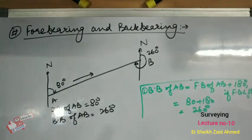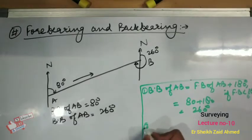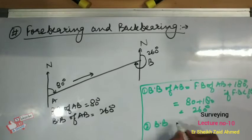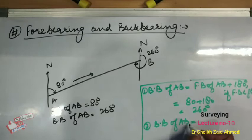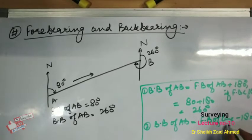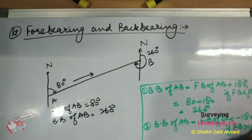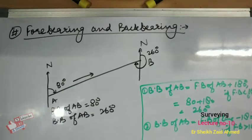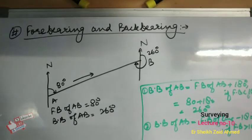In this way we can calculate the backbearing of a line using the value of its forebearing. These two formulas are used exclusively in the case of the Whole Circle Bearing system.